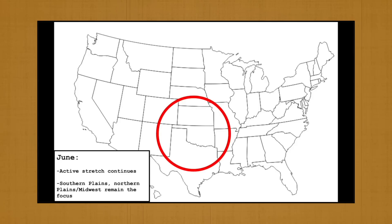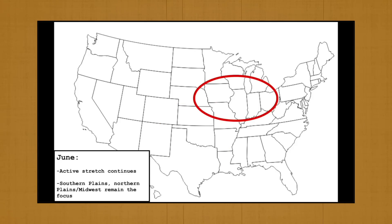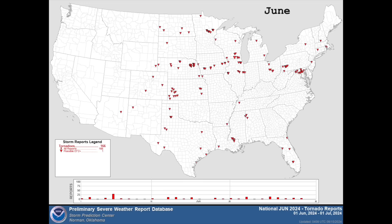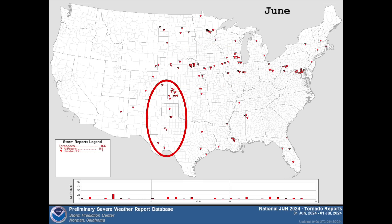Overall, our forecast for where June's tornado activity would take place wasn't too bad, with the corridor from the central plains into the Midwest remaining a hot spot and scattered activity across the southern high plains, but our call for an above average June fell flat, with only 166 tornado reports and 122 confirmed tornadoes, well shy of the climatological average.